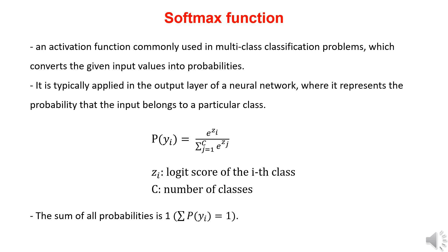Now, let's take a look at the softmax function. Softmax is an activation function widely used in multi-class classification problems, and it converts the given input values into probabilities. It is typically applied in the output layer of a neural network and represents the probability of the input belonging to a particular class.